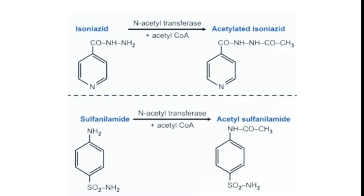Conjugation with acetyl-CoA is called acetylation. Acetyl-CoA combines with compounds such as isoniazid, converting it into acetylated isoniazid, and similarly combines with sulfonamide, converting it into acetylsulfonamide.